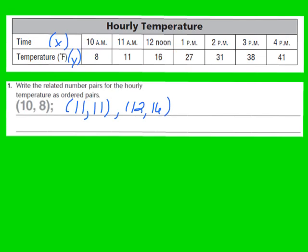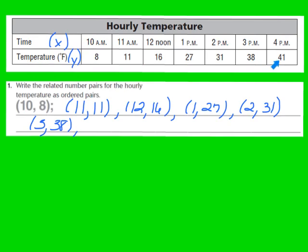At 1 p.m., the temperature was 27 degrees Fahrenheit, so the next ordered pair is (1, 27). At 2 p.m., the temperature was 31 degrees Fahrenheit, giving us (2, 31). At 3 p.m., the temperature was 38 degrees Fahrenheit, so the next ordered pair is (3, 38). Finally, at 4 p.m., the temperature was 41 degrees Fahrenheit, giving us our last ordered pair of (4, 41). We have now written all the related number pairs as ordered pairs.